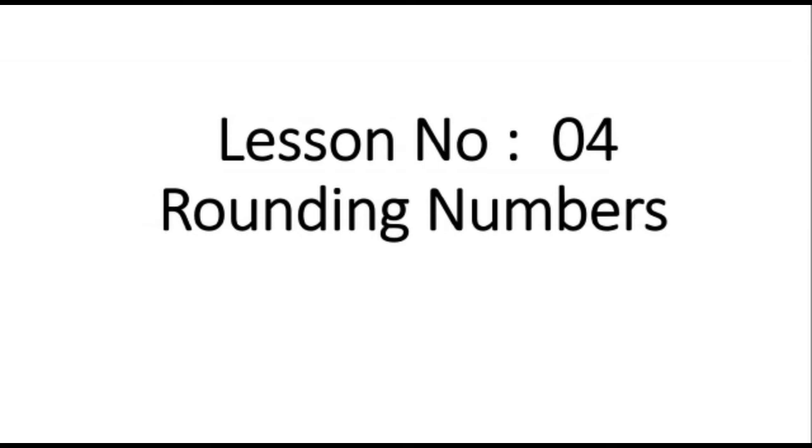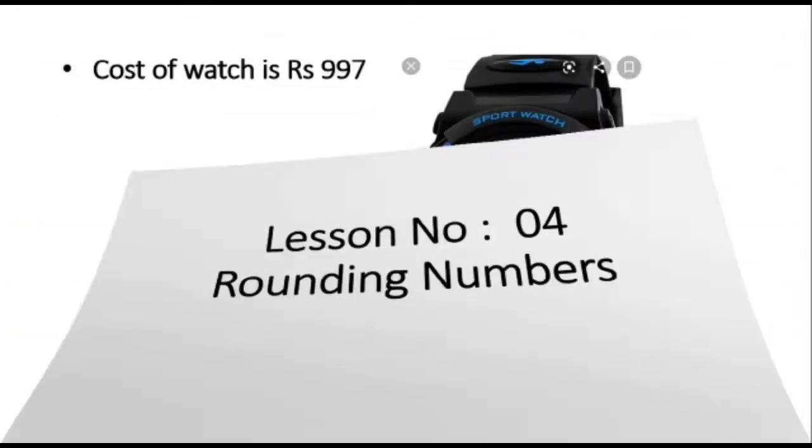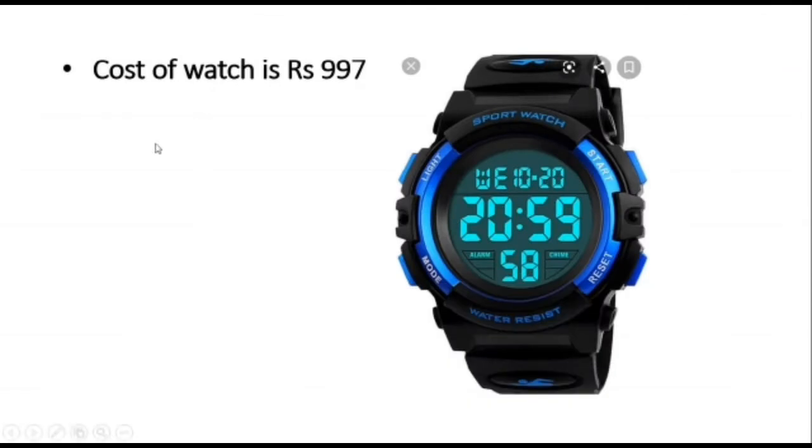Today is rounding numbers. I am going to explain this with the help of an example. Suppose you bought a watch and the cost of your watch is rupees 997, and your friend asks you about the cost of your watch, and you reply that it is of rupees 1000. Here you have told the cost of your watch and you have changed it to its nearest value. This is actually called rounding of numbers.